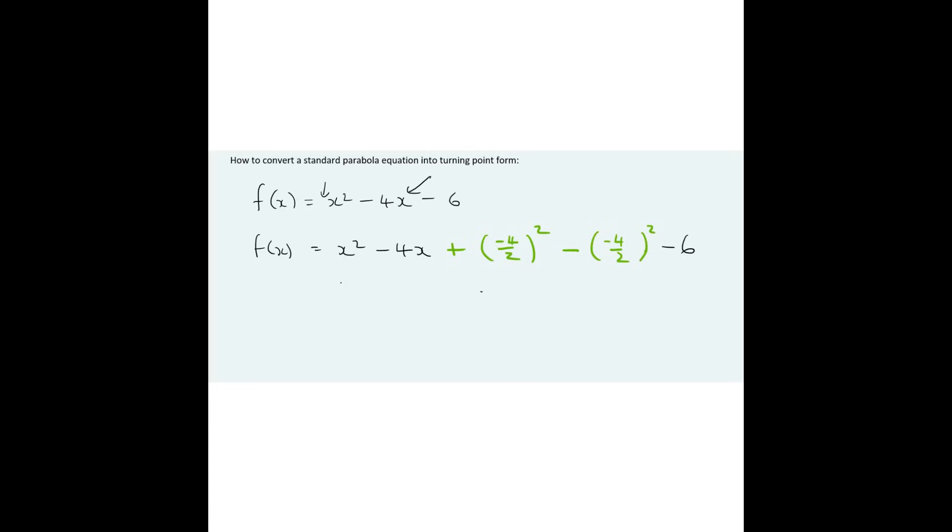And then the original minus 6 will just go over there. So let's compare carefully what we've actually done. We've taken this original equation up here. We've still got all the parts. There they are. But in the middle, we've got this part over here.